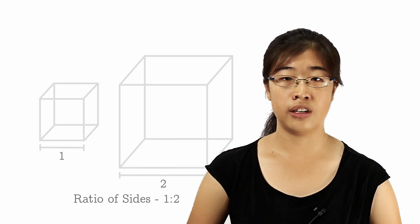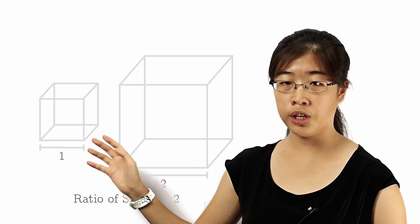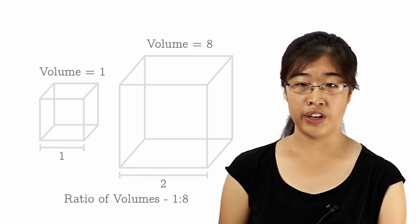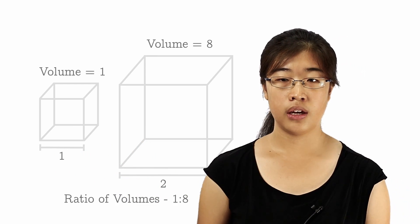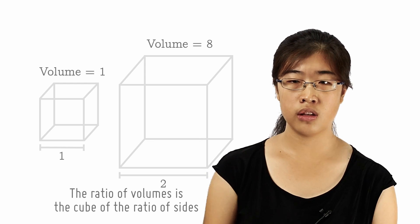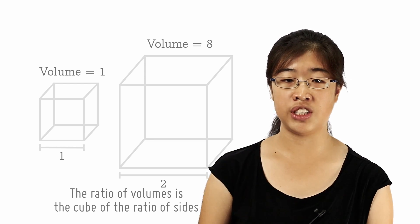Now let's consider their volume. The smaller cube has a volume of 1, while the larger cube has a volume of 8. So the ratio is 1 is to 8. In other words, the ratio of volume is cube of the ratio of sides.